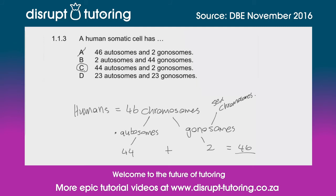A) 46 autosomes and 2 gonosomes would add up to 48 chromosomes, so no. B) 2 autosomes and 44 gonosomes — yes, it adds up to 46, however the numbers are the wrong way around; it should be 44 autosomes and 2 gonosomes. And D) 23 autosomes and 23 gonosomes — no, there's not an equal amount of autosomes to gonosomes. So therefore C is still our correct answer.